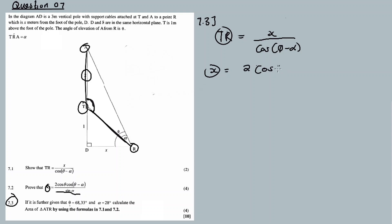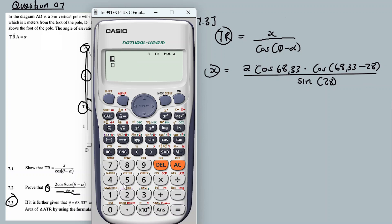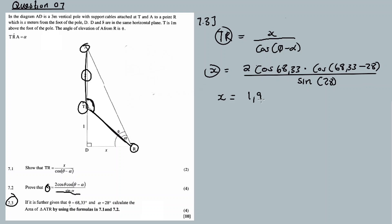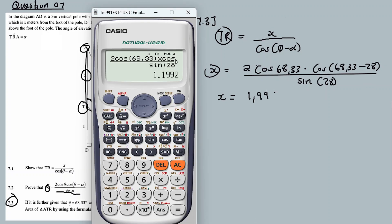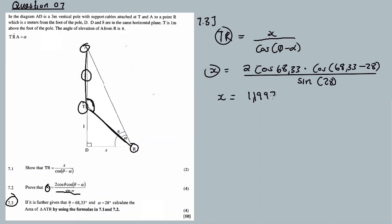Calculating X: X equals 2·cos(68.33)·cos(68.33 minus 28) divided by sine(28). That gives X equals 2·cos(68.33)·cos(40.33) divided by sine(28). Calculating this to four decimal places gives X approximately equal to 1.9920. This is not the final answer — it's an intermediate value.